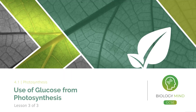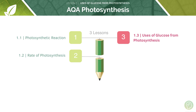Welcome to this tutorial on the use of glucose from photosynthesis. In our last few sessions we had a look at the photosynthetic reaction and also at how we can define the rate of photosynthesis. On top of this we're going to have a look at how we can use the key product from photosynthesis, which is glucose, in order to make structures like proteins.